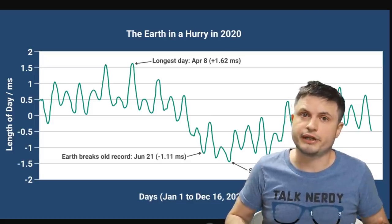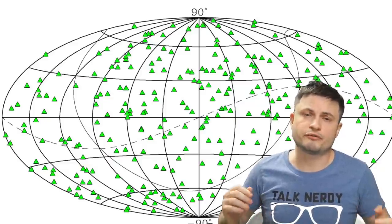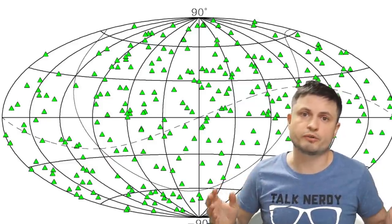But satellites, on the other hand, and by association, all of the technology that depends on these satellites would feel this and would actually be affected by it quite dramatically. And because of this, and also because of all of the precision that we require for modern-day technology, back in 1972, the scientists introduced what's known as a leap second.